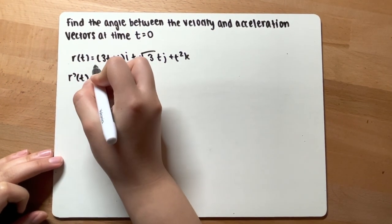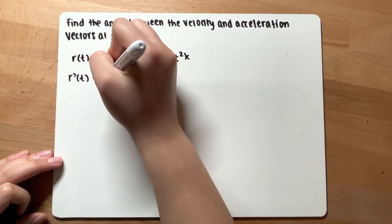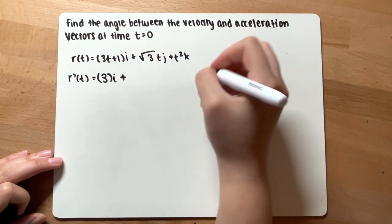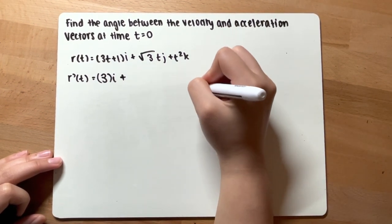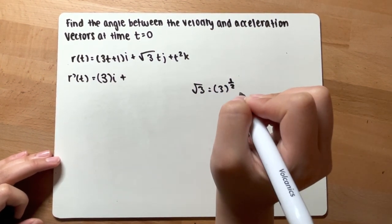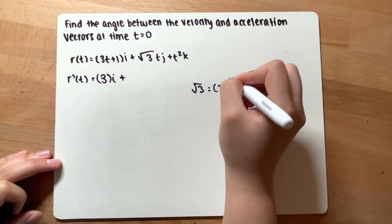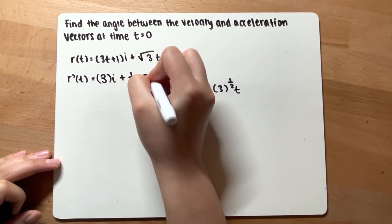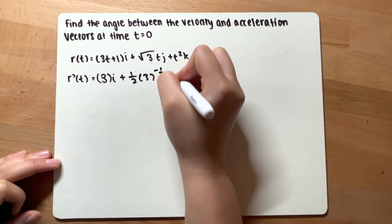So r'(t): derivative of 3t plus 1 is 3i plus derivative of this. With square roots, you could write square root of 3 to be 3 to the 1 half power. And bring this down, you get 1 half 3 to the negative 1 half tj.